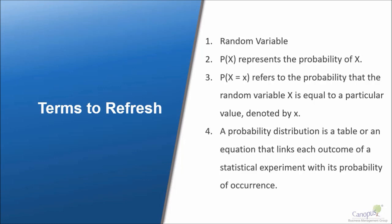A probability distribution is a table or an equation that links each outcome of a statistical experiment with its probability of occurrence.